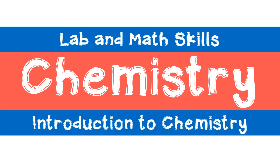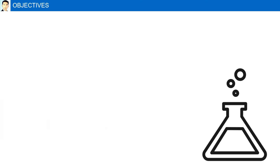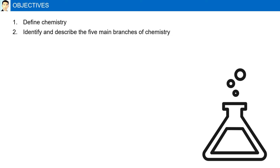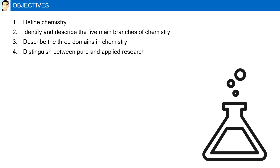Introduction to Chemistry. Objectives: Define chemistry. Identify and describe the five main branches of chemistry. Describe the three domains in chemistry. Distinguish between pure and applied research. And finally, describe how modeling is used in chemistry.